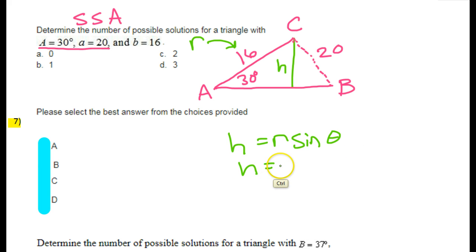So the height is going to be 16 sin 30. I happen to know that sin 30 is one half, so this is going to be one half of 16, so that's going to be 8.